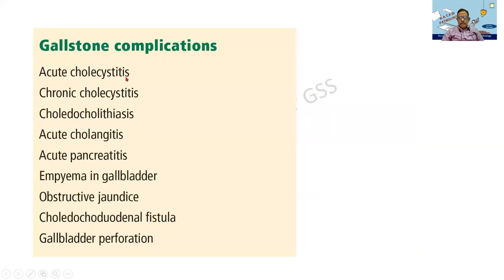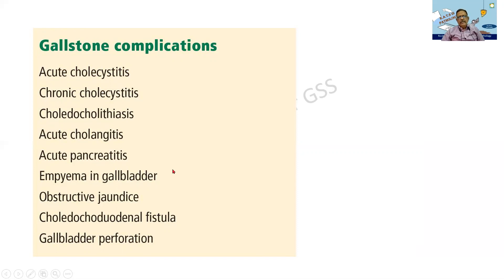What are the complications of gallstones? Acute cholecystitis, chronic cholecystitis, choledocholithiasis — which is formation of stones again. Acute cholangitis — severe inflammation of the duct or gallbladder. Pancreatitis — acute pancreatitis can be because of alcohol or gallstones. Sometimes retained secretions can form pus: empyema of the gallbladder. Obstructive jaundice. Fistula can be formed between the gallbladder and the intestine. There can be acute inflammation, chronic inflammation, formation of stones, formation of pus and empyema, fistula, and perforation.